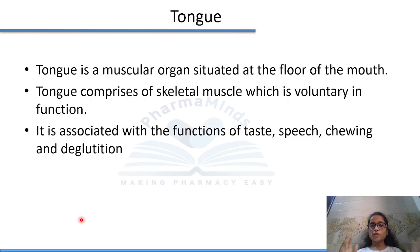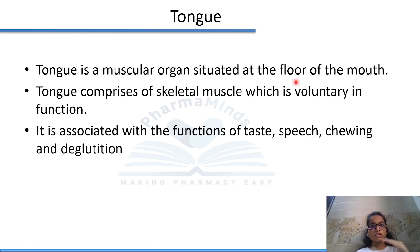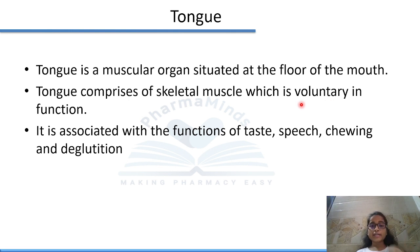So that was all about the ear. Now we will start discussing about tongue. Tongue is a muscular organ situated at the floor of the mouth. It comprises skeletal muscle which is voluntary in function. It is associated with the functions of taste, speech, chewing, and deglutition.